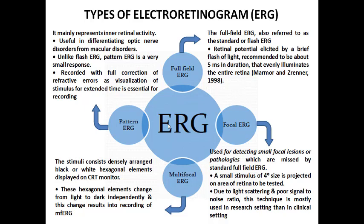Regarding the types of electro-retinogram, there are four options. The most common is full-field ERG, referred to as standard or flash ERG, where retinal potentials are measured by a brief flash of light of about five milliseconds duration that stimulates the entire retina. A further improvement is focal ERG, used to detect small focal lesions or pathologies missed by standard full-field ERG. A small stimulus of four degrees of size is projected on the retina to be tested; due to light scattering and poor signal-to-noise ratio, this technique is mostly used in research rather than clinical settings.